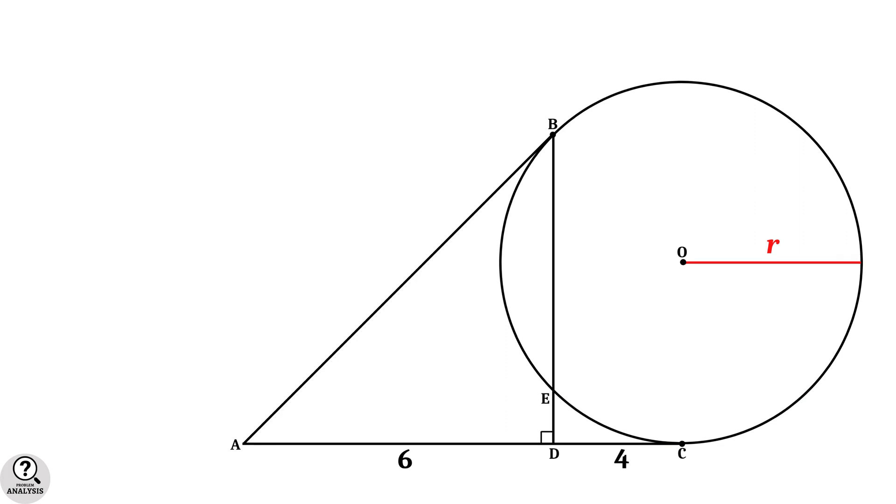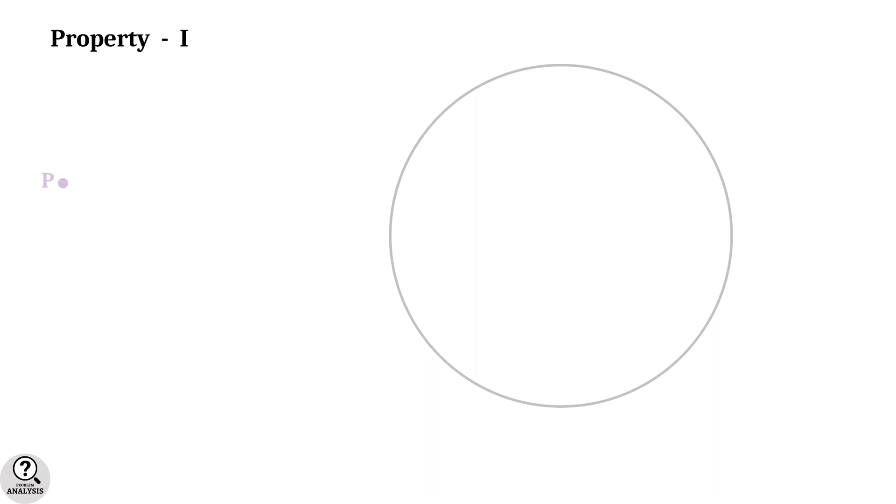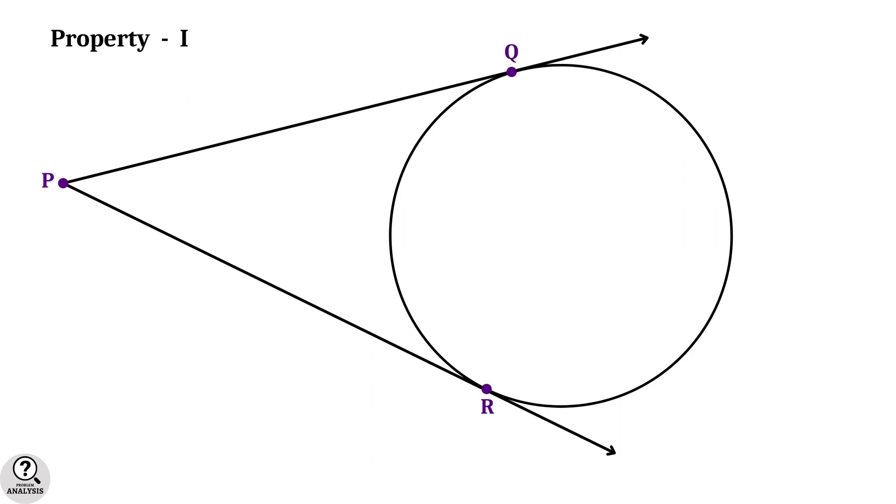Before going to the further explanations, we need to know some important properties of chords and tangents of a circle. In fact, there are 4 properties in total. Let's see them step by step. So, property 1. Consider a circle and a point P outside the circle. Now draw the two tangents to the circle from the point P. Let's say the touching points are Q and R. Now look at the lines PQ and PR. They are equal. That is, the fact is, the two tangents of a circle drawn from a single point are equal up to their touching points.